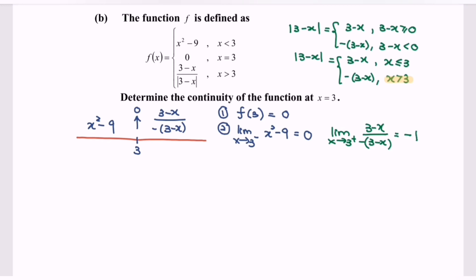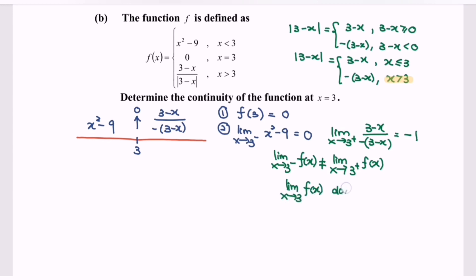Does the limit exist when x equals 3? The left-hand limit of f(x) as x approaches 3 is 0, and the right-hand limit is negative 1. Since the limits are not equal, the limit as x approaches 3 does not exist. Since the limit does not exist, the function f is discontinuous at x equals 3.